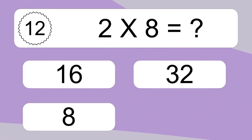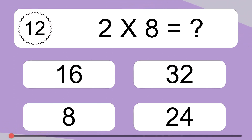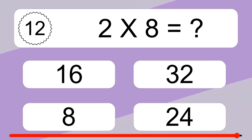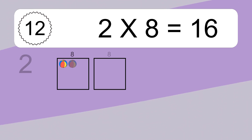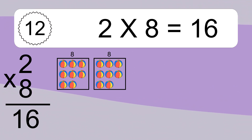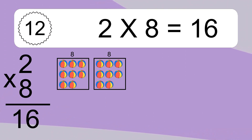2 times 8 equals what? 2 times 8 equals 16. We have 2 boxes and each box has 8 colorful balls inside. If you count all the balls in all the boxes together, you will have 2 times 8 balls. This equals 16 balls.